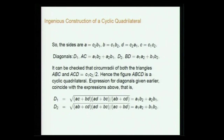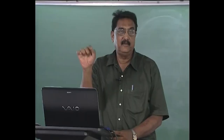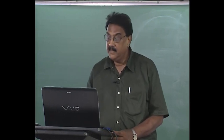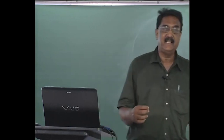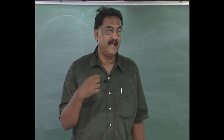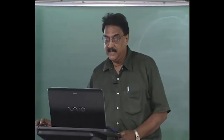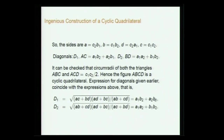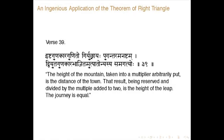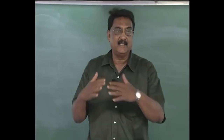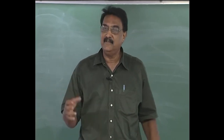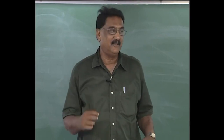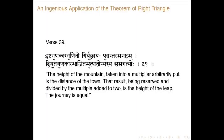The expression for diagonals from Brahmagupta's general formula should coincide with this construction. One can check that diagonal d1 = √((AC+BD)(AD+BC)/(AB+CD)) = a2·b1 + a1·b2, as expected. This is a very good construction. Using these four triangles we constructed one cyclic quadrilateral whose diagonals intersect perpendicularly. Bhaskara later gives another cyclic quadrilateral using the same triangles but with two triangles interchanged, giving a quadrilateral whose diagonals do not intersect perpendicularly.